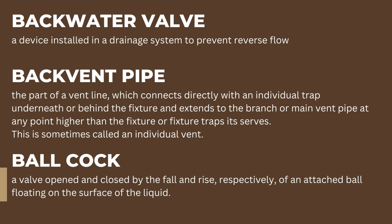Back vent pipe: the part of a vent line which connects directly with an individual trap underneath or behind the fixture and extends to the branch or main vent pipe at any point higher than the fixture or fixture traps it serves. This is sometimes called an individual vent.